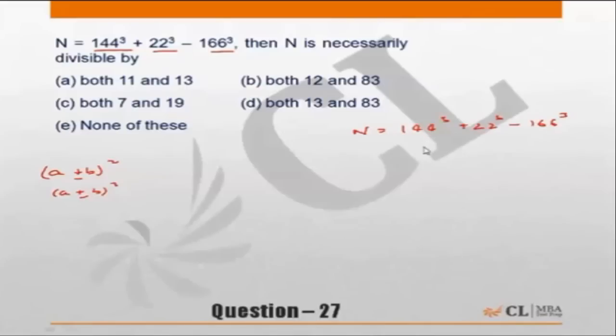If I say 144 is a, then this becomes a cube. And if I say that 22 is b cube, this is nothing but 144 plus 22 is 166, so minus a plus b whole cube.